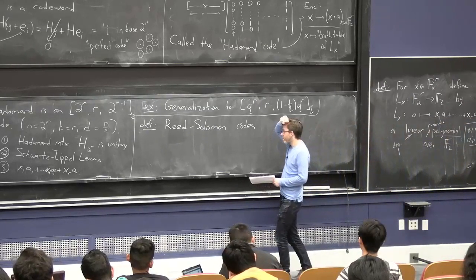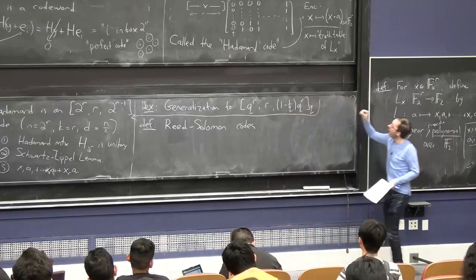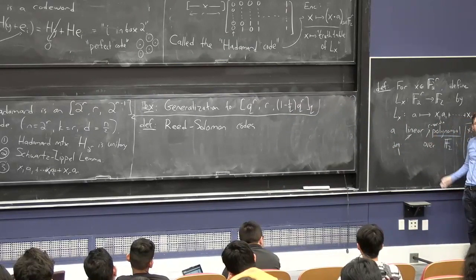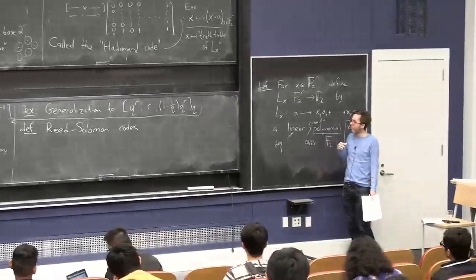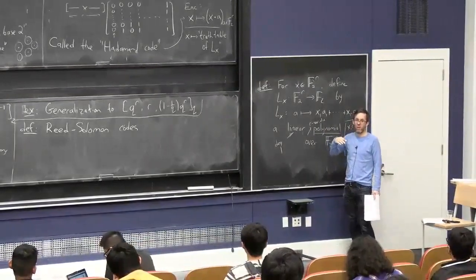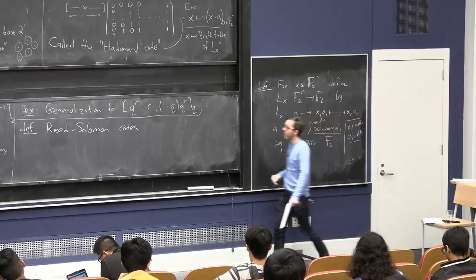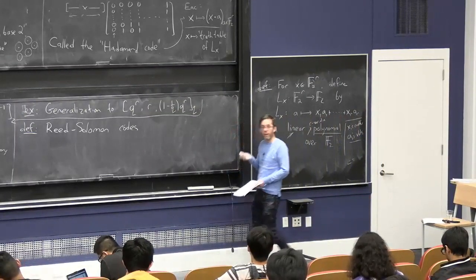These Reed-Solomon codes are basically like a generalization of Hadamard code, but to higher degree polynomials. In fact, to univariate higher degree polynomials. Reed-Solomon codes are going to be about univariate higher degree polynomials.